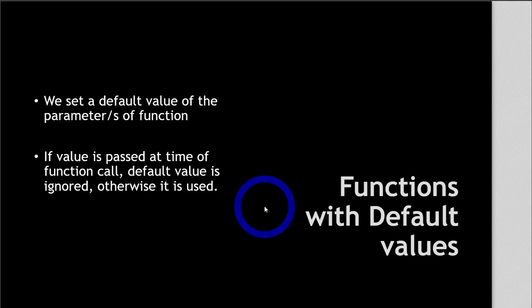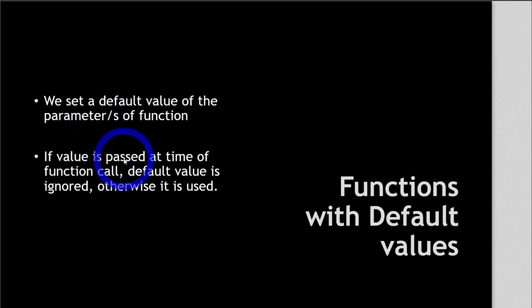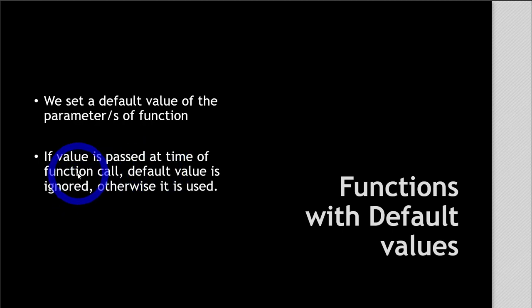First of all, let's see the functions with default values. What we do is we set a default value for the parameter or parameters of a function. At the time of function call, if the value is passed, then the default value is ignored. Otherwise, if the value is not passed at the time of function call, the default value is used.